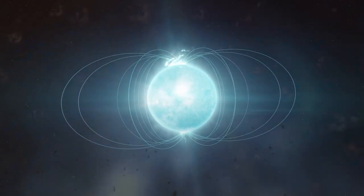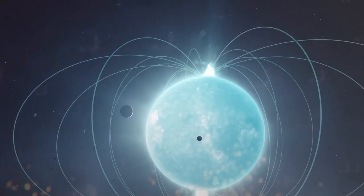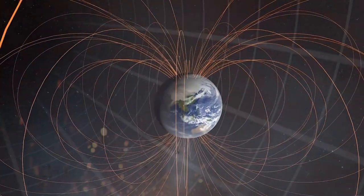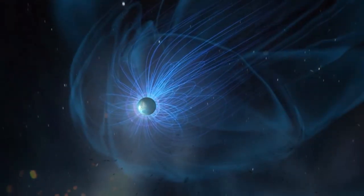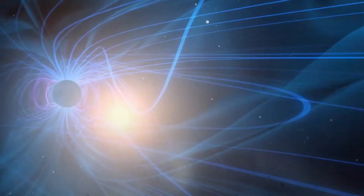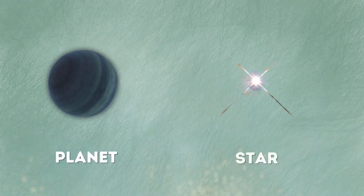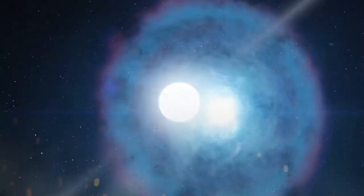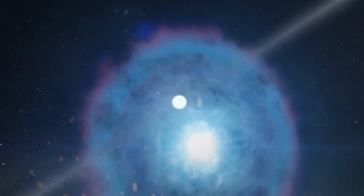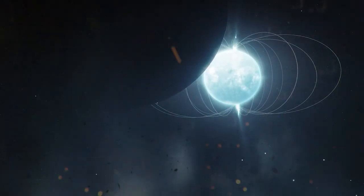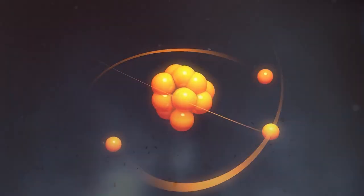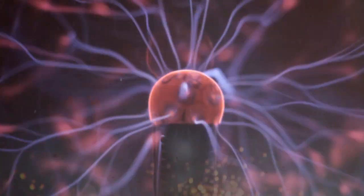But the power of magnetars isn't just a numbers game. Their magnetic fields are so strong that they can have devastating consequences on anything that comes too close. Imagine a magnetar cruising through space, its magnetic field stretching out like a giant tentacle. If a nearby planet or star gets caught in its grasp, it's like being trapped in an unavoidable grip. The magnetic field can strip away the planet's atmosphere, leaving it barren and lifeless. It can also cause violent auroras as charged particles are flung around by the magnetic field's force.